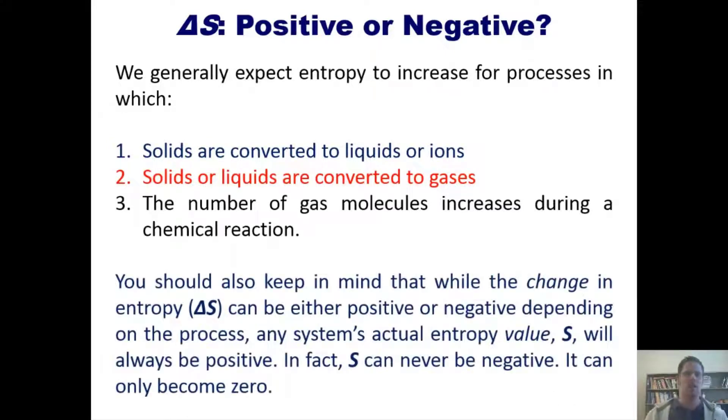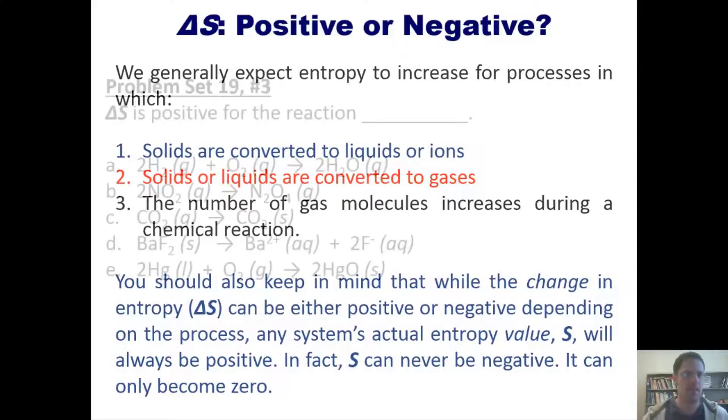I invite you to think about them just so that you can wrap your head around this subject. You should also keep in mind that while the change in entropy or delta S can be either positive or negative depending on the process, any system's actual entropy value S will always be positive. In fact, S can never be negative, it can only become zero. That takes us to a problem: delta S is positive for which of the following reactions?